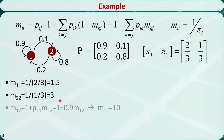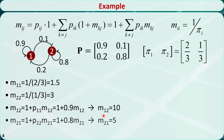m12 is equal to 10. If we are currently in state 1, it will take an average of 10 transitions to first reach state 2. This means a person who last purchased brand 1 toothpaste will purchase brand 1 ten times on average before switching to brand 2. m21 is equal to 5. If we are currently in state 2, it will take an average of 5 transitions to first reach state 1, meaning a person who last purchased brand 2 toothpaste will purchase brand 2 five times on average before switching to brand 1.